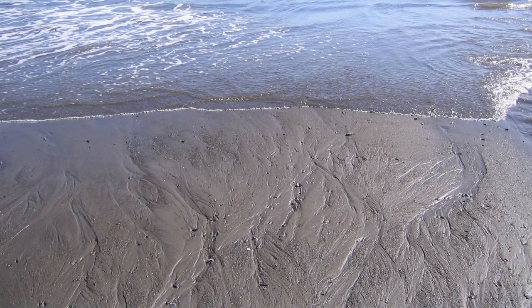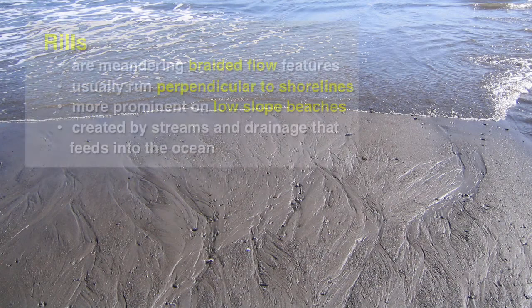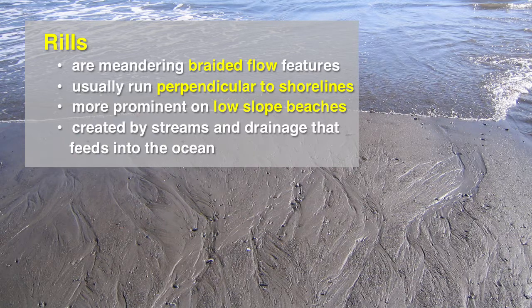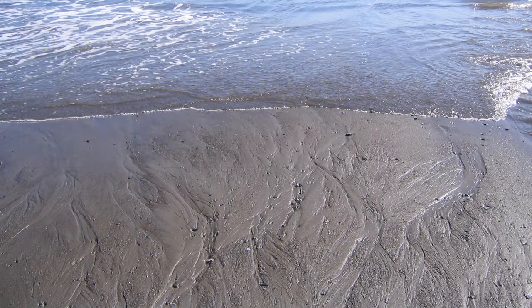Next we see rills. These are meandering textures and braided flow features that we see on the surface of the beach. They usually run perpendicular to the shoreline and are more prominent on low-slope beaches. They're created when streams and drainage need to find their outlet to the ocean.